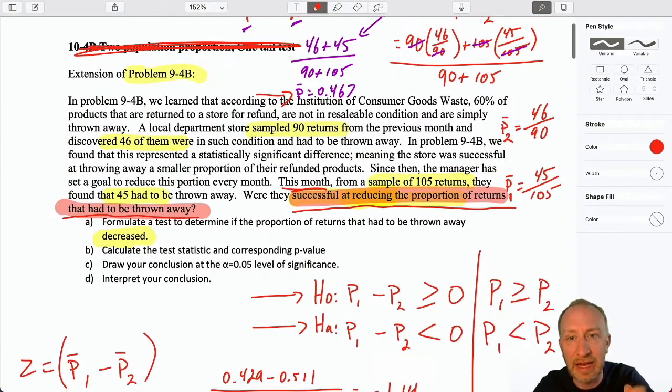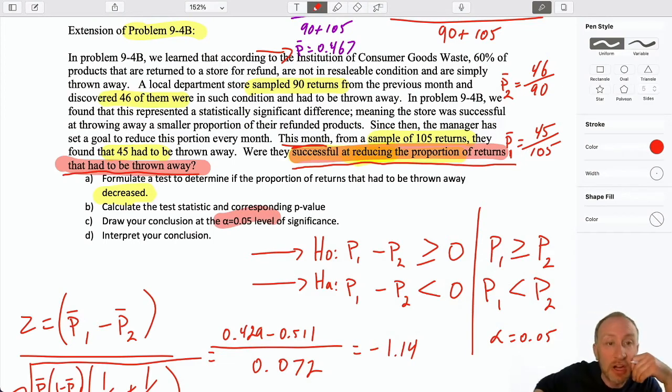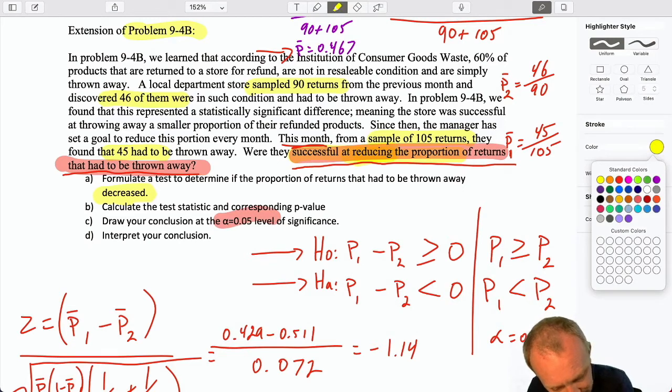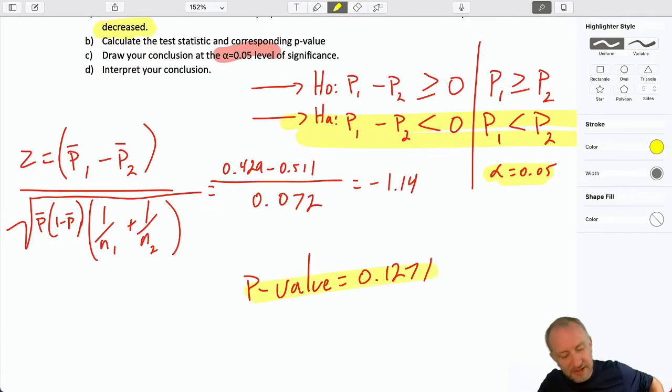So our P-value here, 0.1271. If we're doing this test at alpha 0.05, the level of significance, what does that mean? Well, don't forget what that level of significance means. That's telling us how comfortable we are committing a type 1 error. How comfortable are we believing that we have succeeded at reducing the proportion of our returns that are being thrown away when, in fact, they are not, or we have not met that goal. What is that type 1 error? It's not just rejecting the null when it's true. In this context, it's being led to believe this, that we reject when, in fact, the null is true. So our level of significance, our level of tolerance towards a type 1 error that is believing that we've been successful when, in fact, we have not been is only 5%. Our P-value is 0.1271.